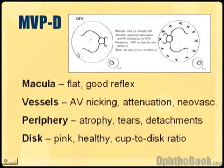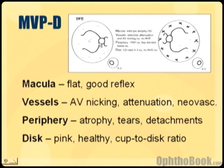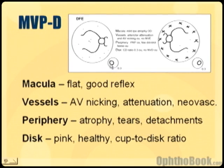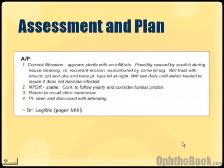M is for macula — that's the central part of your vision. If you see it's flat it has a good reflex. V is for vessels — see if there's any arterial nicking from hypertension, any attenuation or neovascularization. P is for periphery — that's the peripheral exam. And D is for disc — that's the optic nerve. See if it's pink and healthy, and comment on the cup-to-disc ratio, which is important especially with glaucoma.